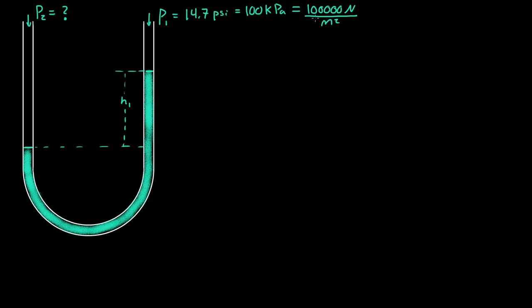So how can we use this height to actually give us a pressure reading? Well, the pressure due to just the height of this fluid - the pressure of the water - is equal to the density of the water times the height of the water times the gravitational constant.